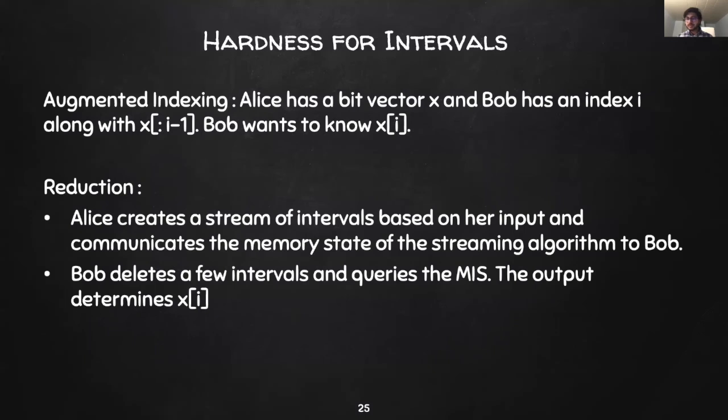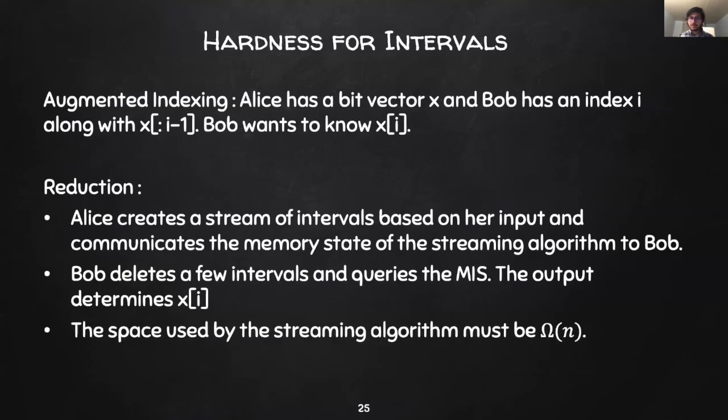Based on the output, Bob can determine the value of the i-th bit in Alice's input, if the corresponding streaming algorithm was indeed a 2 minus epsilon approximation. Since this protocol computes a solution to the augmented indexing problem, the space used by the streaming algorithm must be omega-n.